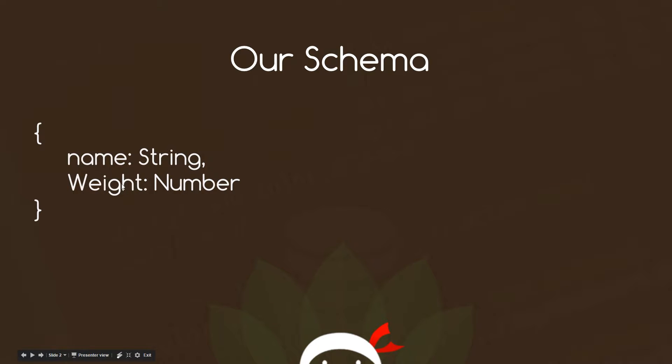So this is what we're going to increment. I want you to imagine that all of our Mario characters are going to have some kind of party, stuff their faces, and their weight is going to go up by one. So we're going to use that increment operator to update the records so that the weight goes up by one.